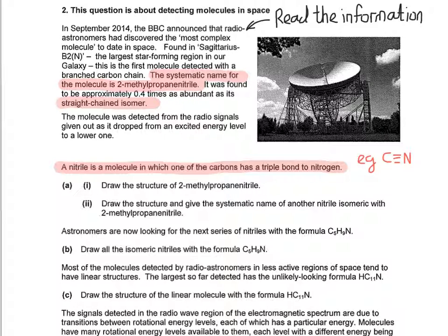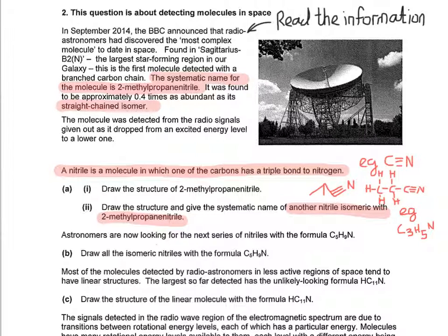So the structure of 2-methylpropanitrile would simply be something like that. What they want is the structure and the systematic name of another nitrile isomeric with 2-methylpropanitrile. So it's another molecule that has C4H7N as its molecular formula and it's also got the C-triple bond N functional group. This one would be called butanenitrile because you have four carbons in the main carbon chain. It's the same as changing from 2-methylpropane to butane. They'd be isomeric with each other in the same way.